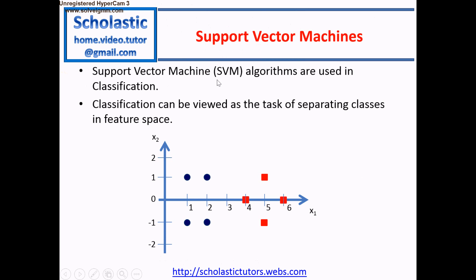Support Vector Machine SVM algorithms are used in classification. Classification can be viewed as the task of separating classes in feature space. Here is an example: this is the feature space with the x1 feature, x2 feature, a blue class, and a red class.